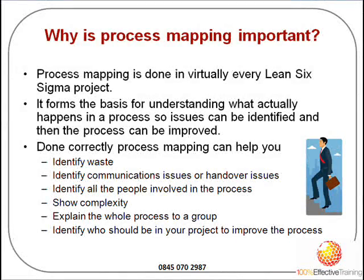Process mapping is important because it's done in virtually every single Lean Six Sigma project to understand the various steps within the process, either to explain it to people or to identify where the problems are. Process mapping also helps us to identify the waste in the process — the delays, the transport, the inspection — and generally where the problems are as we move through the process mapping process.